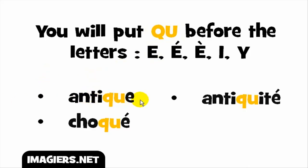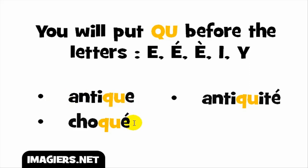The first example: you've got the vowel E, and QU before it, so you get the /k/ sound. The full word goes like 'antique'.